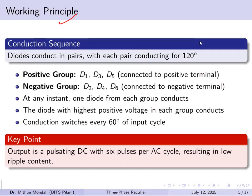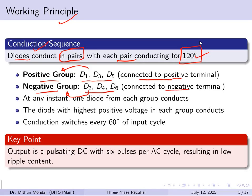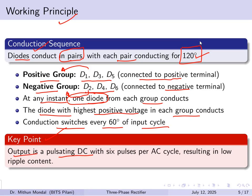For the working principle, diodes conduct in pairs, with each pair conducting for 120 degrees. There are a positive group (D1, D3, D5) and a negative group (D2, D4, D6). At any instant, one diode from each group conducts — specifically, the diode with the highest positive voltage in each group. Conduction switches every 60 degrees, producing a pulsating DC with 6 pulses per AC cycle, resulting in low ripple content.